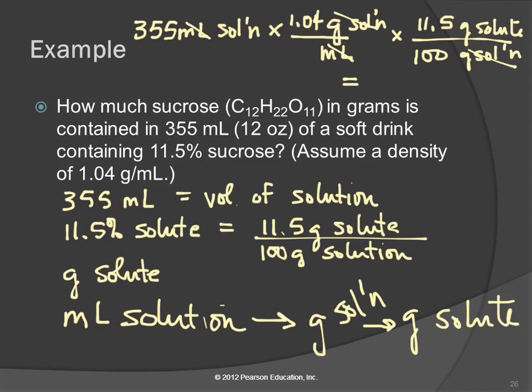Now we have everything in place. We can just get out our calculators. 355 times 1.04 times 11.5 divided by 100. Let's round that to three sig figs, 42.5 grams of solute. So there's 42.5 grams of sugar in that can of soda. Any questions?